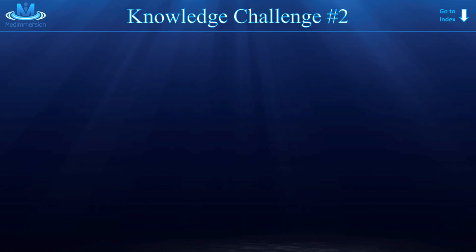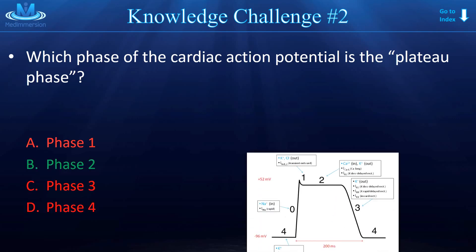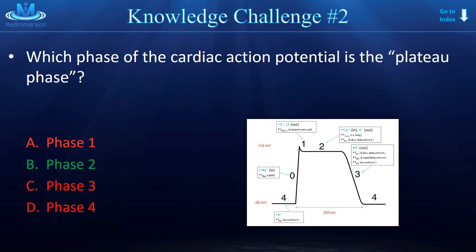Knowledge challenge number two: Which phase of the cardiac action potential is the plateau phase? The answer is phase two. Phase zero is the rapid depolarization phase. Phase one is an initial repolarization phase. Phase two is the plateau phase. Phase three is complete repolarization. And phase four is the resting phase.